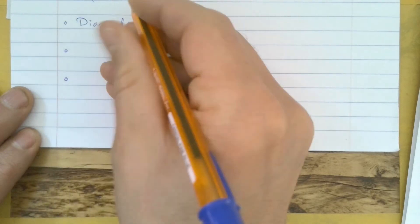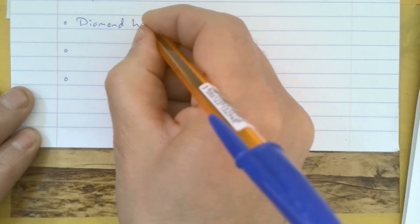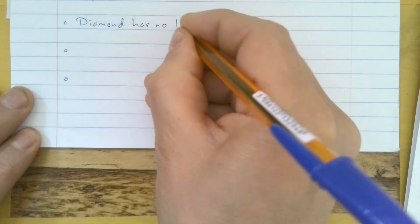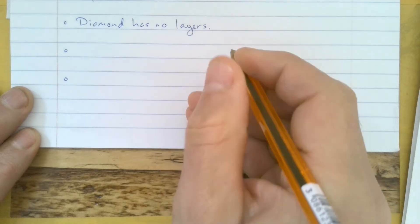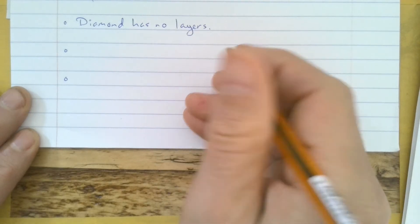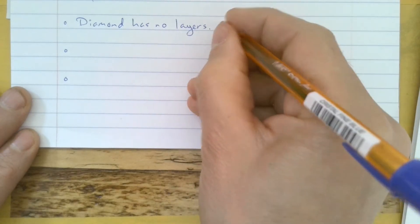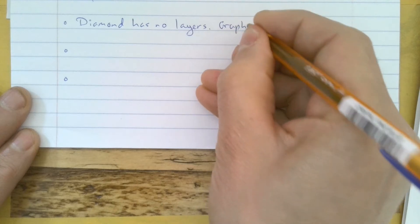Well, we know that diamond has no layers. Okay, but we need to make this comparison. Graphite has layers.